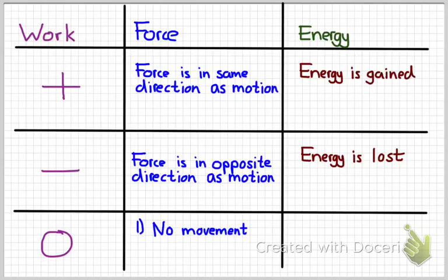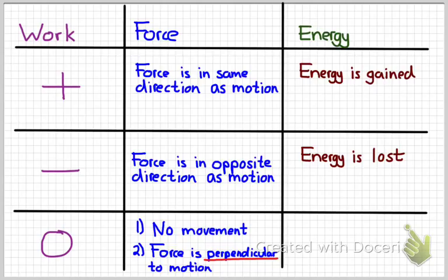There's two situations in which the work done by a force can be zero. One, if there's no movement. Two, if the force is perpendicular to the movement. So in our previous example, gravity and the normal force were perpendicular to the direction of motion, and so those two forces did no work. Another example would be a centripetal force. If all that a force is doing is making something change direction, then it won't do any work. In that case, there won't be any change in energy.